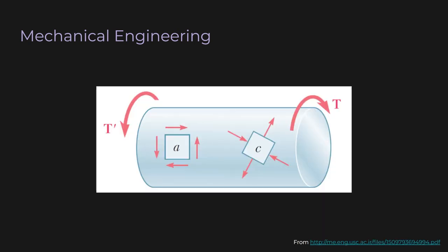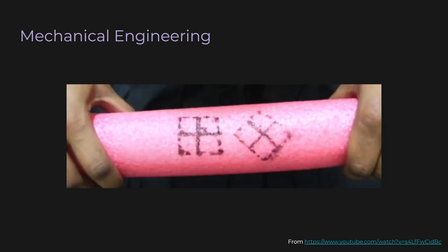If we draw tiny squares on the cylinder, we can understand this visually. Square A gets rotated because of shear forces. Square C, oriented at roughly 45 degrees, gets stretched along one direction and compressed along the other, but it won't get rotated. There's a great video that shows this in action. I'll put a link in the description, but here's a screenshot.